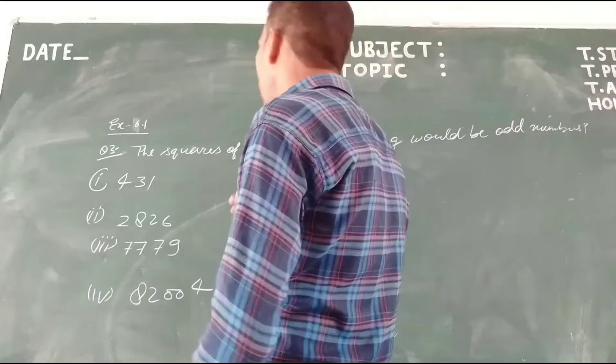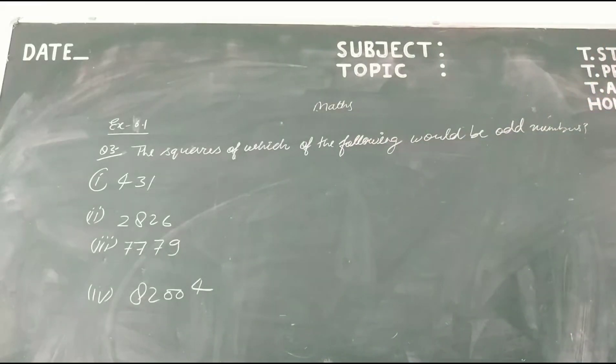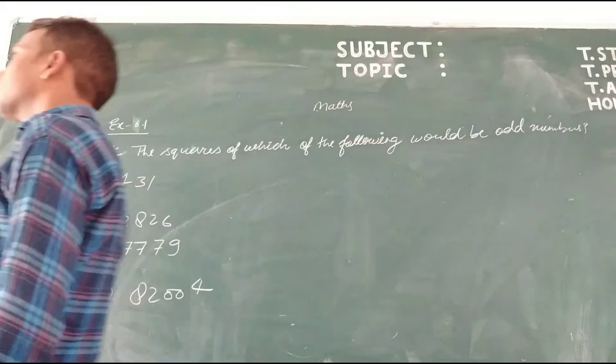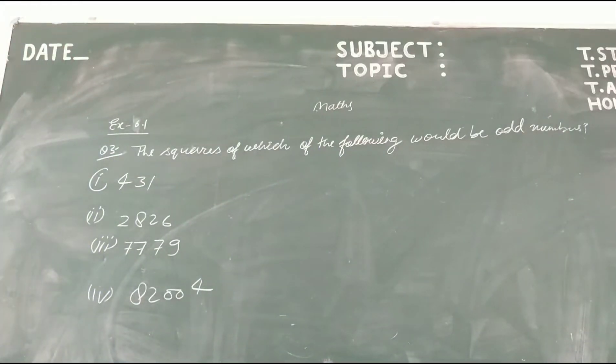The squares of which of the following would be odd numbers? We have to find out if we square the following numbers, which number is an odd number.